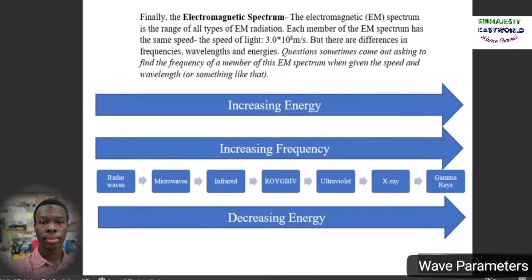Finally, let's take a look at the electromagnetic spectrum. The EM spectrum is a range of all types of EM radiation. Each member has the same speed, like the speed of light, 3.0 times 10 to the 8 meters per second. There are differences in frequencies, wavelengths, and energies. You don't need to know the specific values for the frequency or wavelength or energies. Usually you're asked to find these in calculations. But you do need to know that they all travel at the same speed, which is 3.0 times 10 to the power of 8 meters per second.